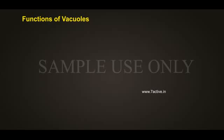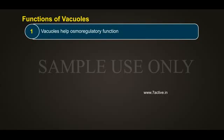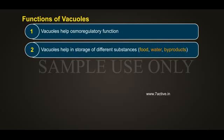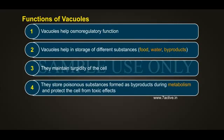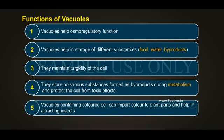Functions of Vacuoles: 1. Vacuoles help in osmoregulatory function. 2. Vacuoles help in storage of different substances - food, water, byproducts. 3. They maintain turgidity of the cell. 4. They store poisonous substances formed as byproducts during metabolism and protect the cell from toxic effects. 5. Vacuoles containing colored cell sap impart color to plant parts and help in attracting insects.